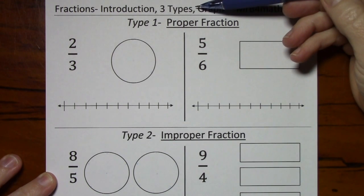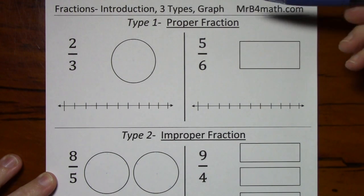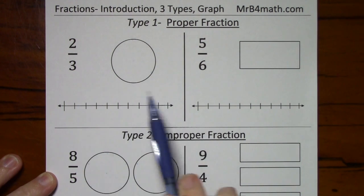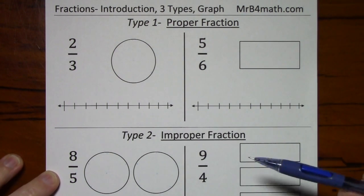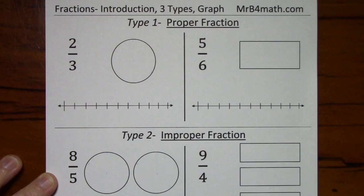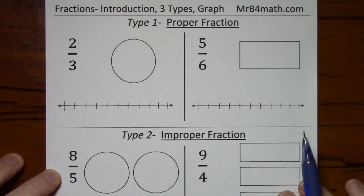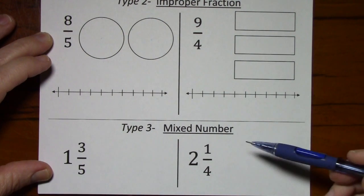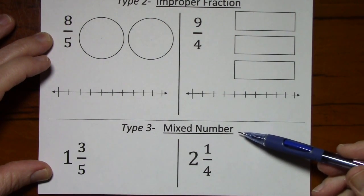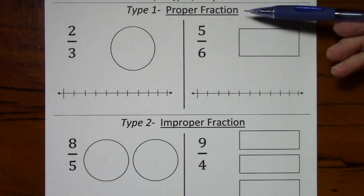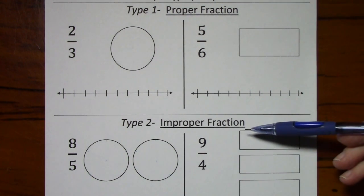We'll look at three types of fractions: proper fractions — here are two examples — improper fractions — here are two examples, and I'll show you another example that's not here — and also mixed numbers, which can also be called mixed fractions. We'll start out looking at proper fractions and improper fractions.